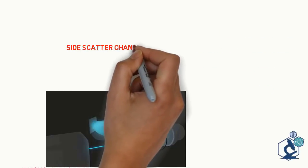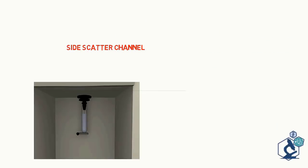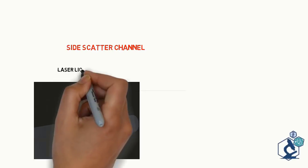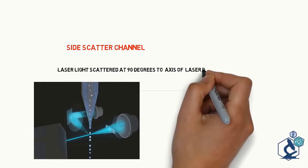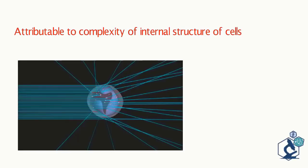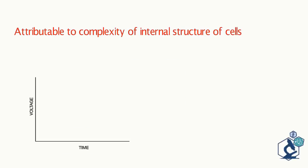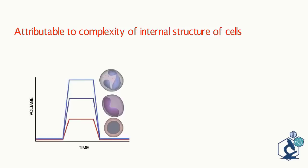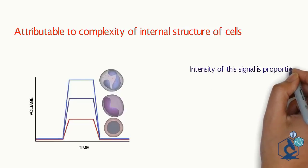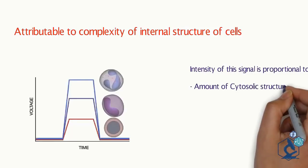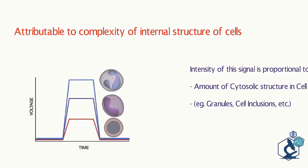The amount of side scattered light is detected by a detector located perpendicular to the path of the laser beam. Side scatter is proportional to the shape and internal complexity of the cell. Just like with forward scattered light, the flow cytometer converts the detected side scattered light into a voltage pulse which is directly proportional to the amount of side scattered light. Intensity of this signal is proportional to the amount of cytosolic structures in the cells such as granules, cell inclusions, vacuoles.